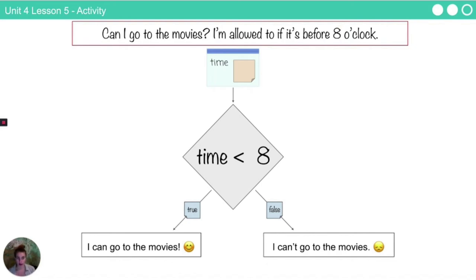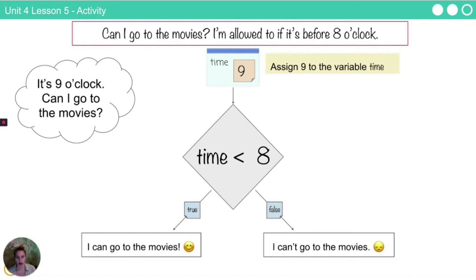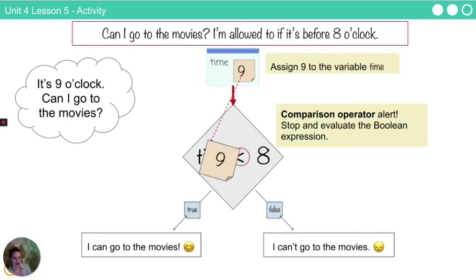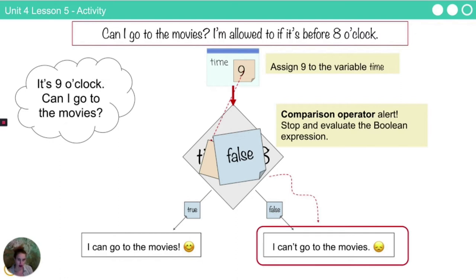So, can I go to the movies? I'm allowed to if it's before 8 o'clock. Let's say it's 9 o'clock. Can I go to the movies? Okay, so let's process this together. I'm going to put 9 in for my time. Assign 9 to the variable time. Great, let's keep going. Now I'm going to input 9 into time in my Boolean expression. I see that I have a comparison operator. Okay, let's do some comparing. 9 is less than 8. Is this a true or false statement? In fact, it is false. So I'm going to keep following this flow chart. And then I am going to follow down this false path. I cannot go to the movies. Have to try again later.